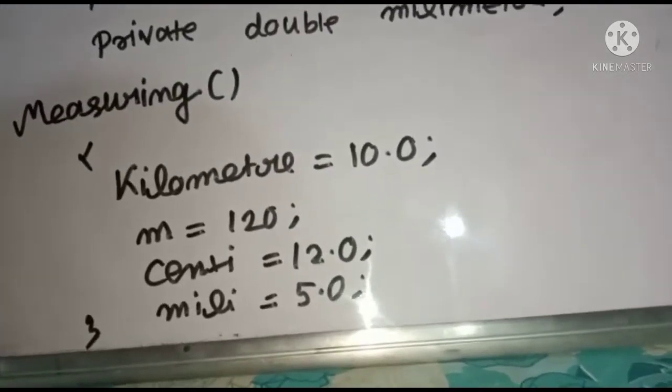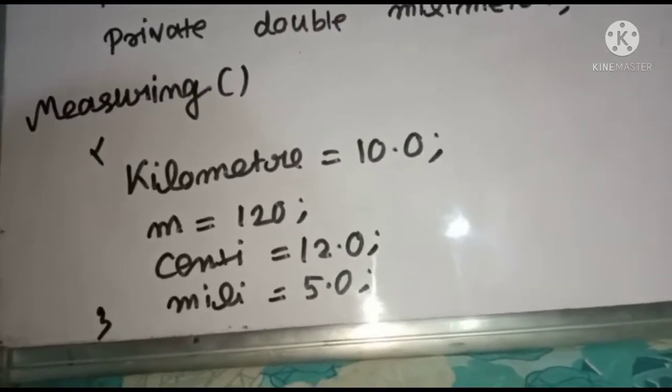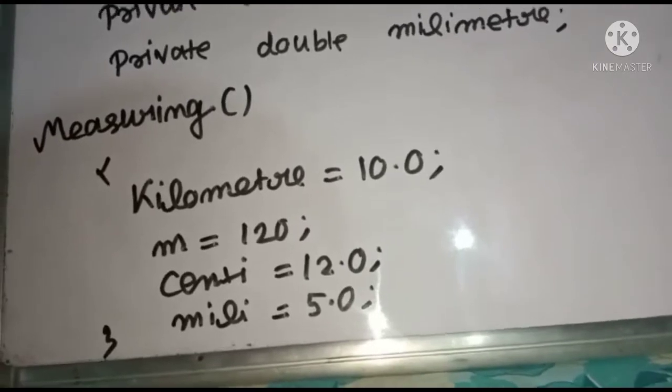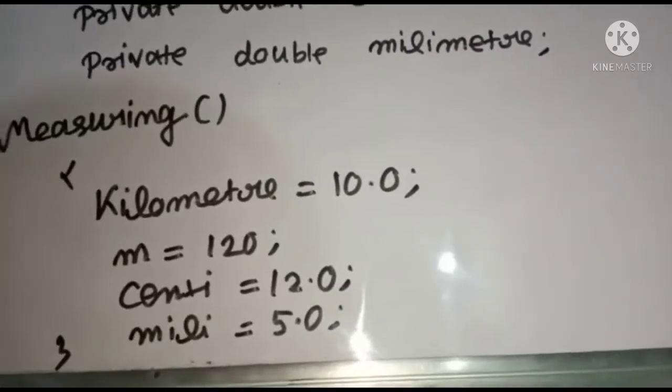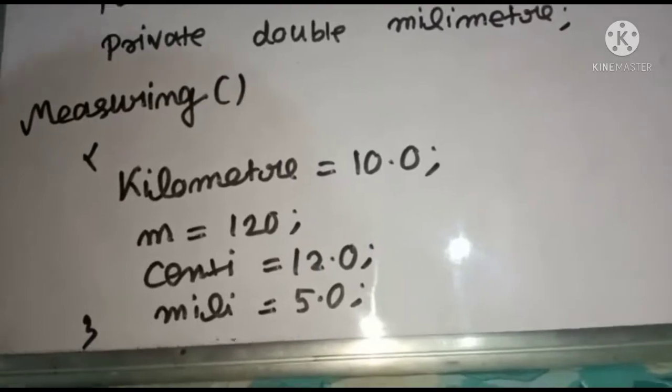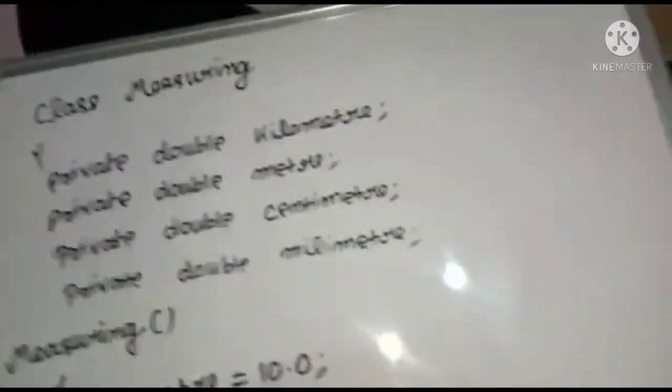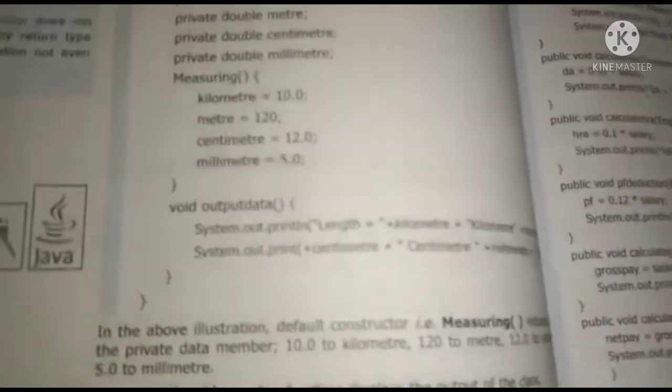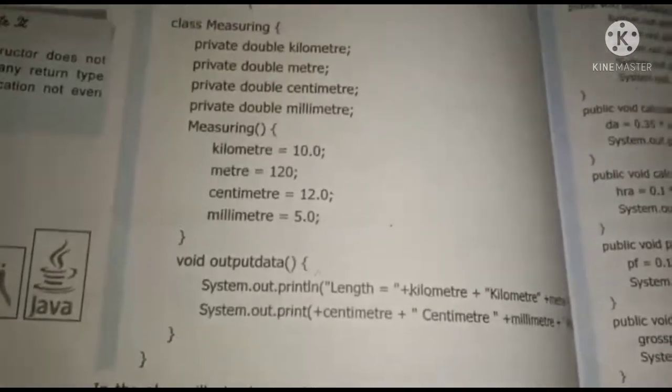And here we have passed the value. Means we are calling the parameter. Kilometer equals to 10. We are giving meter equal to 120, centimeter 12.0, millimeter 5. And then in the last line we are calling the constructor.